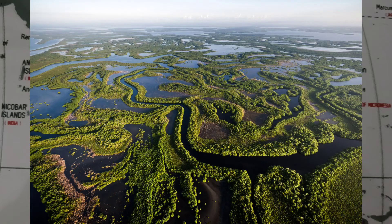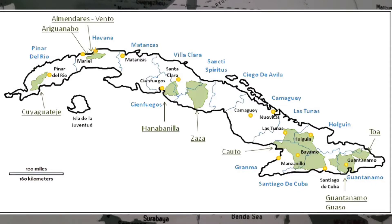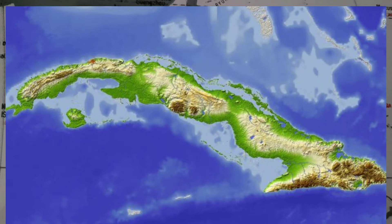Now let's cover some of North American island nations' notable features. The largest river in the Caribbean is the Cauto River, located in the country of Cuba. It is 230 miles or 370 kilometers long and flows into the Caribbean Sea. The river originates in the Sierra Maestra mountain range at an elevation of over 600 meters or 1,900 feet. Rice, sugar cane, tobacco, and cattle are the primary agricultural beneficiaries along its course. It is only one of two navigable rivers in all of North American island nations.